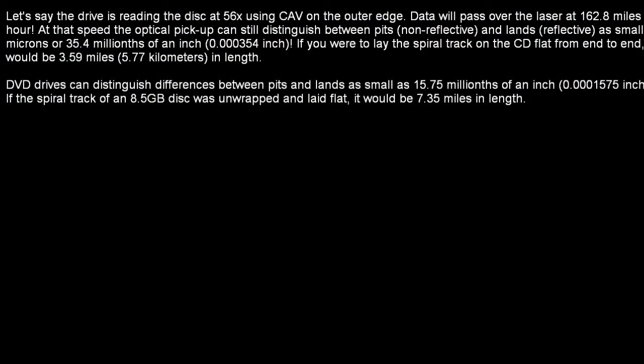Here's an interesting topic which I'm sure a lot of people don't know. In a CD drive reading at 56x using CAV, data will pass over the laser at 162.8 miles per hour. At that speed, the optical pickup can still distinguish between pits and lands as small as 9.9 microns — that's 35.4 millionths of an inch. If you were to take the spiral track on the CD and lay it flat, it would stretch just over three and a half miles in length.